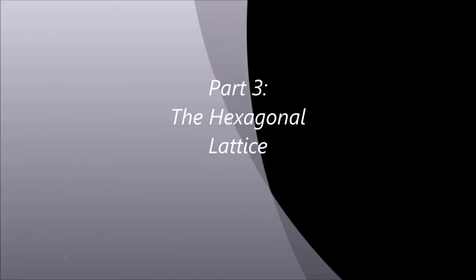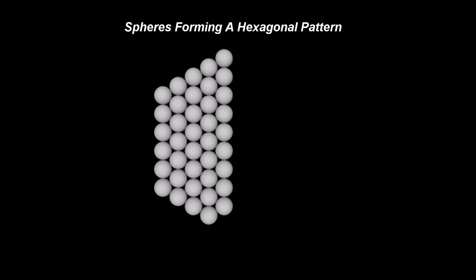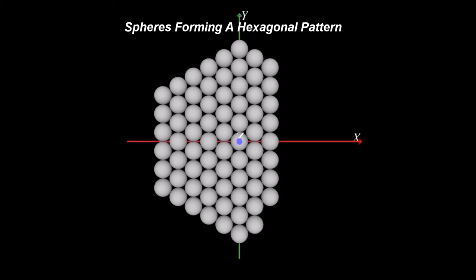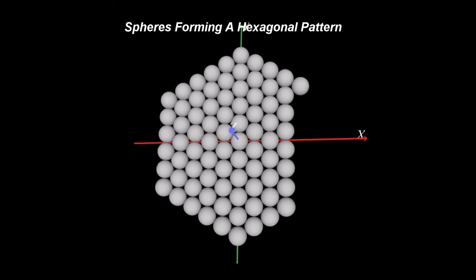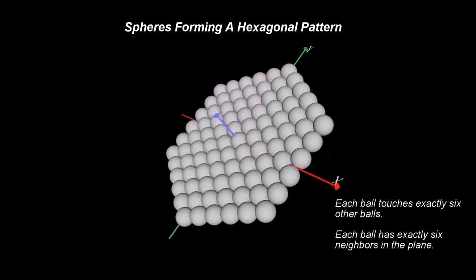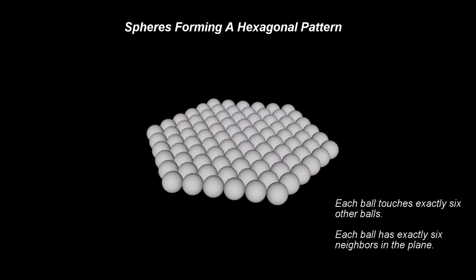Part 3: The Hexagonal Lattice. When you ask your friend to fill up her room with ping pong balls, you get surprised to notice that she, being a more artistic person, is doing it in a totally different way. She starts arranging the ping pong balls on the floor in a hexagonal pattern. In her arrangement, each ball has exactly 6 other neighboring balls, which fit perfectly relative to each other.